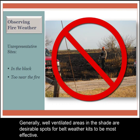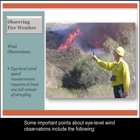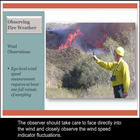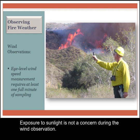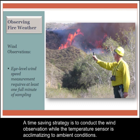Generally, well-ventilated areas in the shade are desirable spots for belt weather kits to be most effective. Some important points about eye-level wind observations include the following. The observer should take care to face directly into the wind and closely observe the wind speed indicator fluctuations. Remember, the wind direction is defined as the direction the wind is coming from. Exposure to sunlight is not a concern during the wind observation. A time-saving strategy is to conduct the wind observation while the temperature sensor is acclimatizing to ambient conditions.